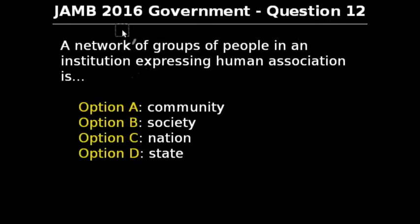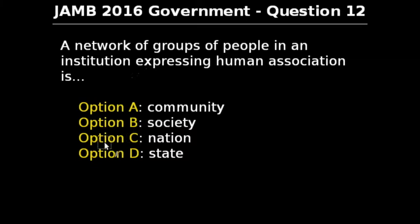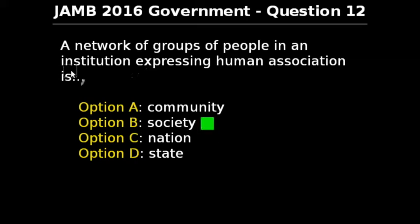Question 12 of JAM 2016 government exam says: a network of group of people in an institution expressing human association is — option A: community, option B: society, option C: nation, option D: states. The correct answer to this question is option B, society, because we are seeing here a group of people in an institution, which makes it a society.